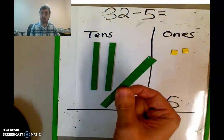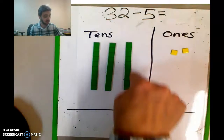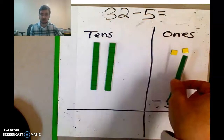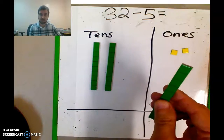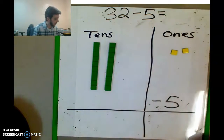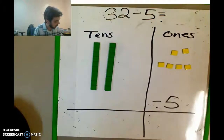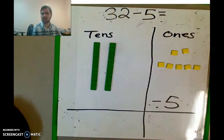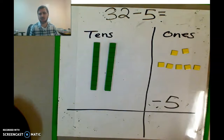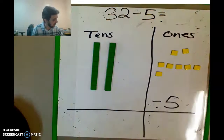This is called regrouping. Instead of having one group of 10, you have 10 ones — that's why it's called regrouping. So I'm going to take this bag of Skittles and pour them out. There's 10 in there. So here we go: one, two, three, four, five. By the way, if you don't like Skittles, you can pretend like whatever you want — cookies, Starbursts, peanut butter cups. I'm actually more of a Starburst guy myself.